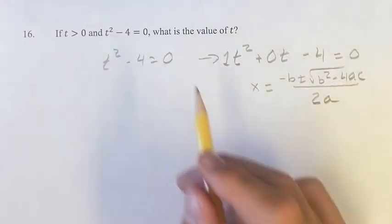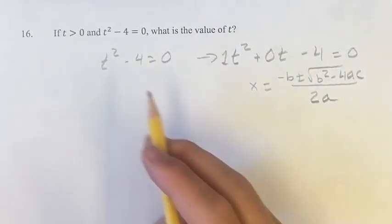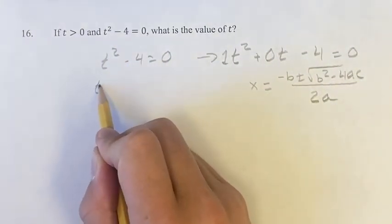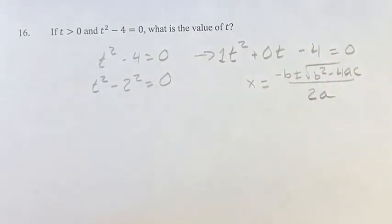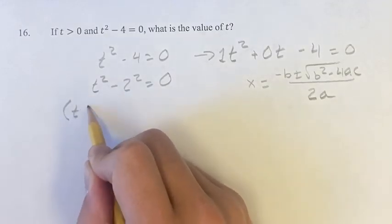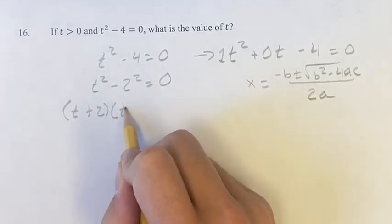but we can do that more simply just by factoring, by noticing this is t squared minus 2 squared. Therefore, this is the difference of two squares, so this is equal to t plus 2 times t minus 2.